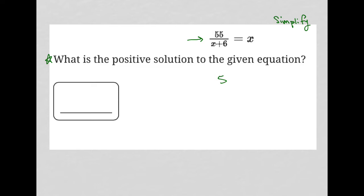So I'm going to just simplify this. You can use your scratch paper to solve this. I'm going to multiply both sides by x plus 6. So it cancels out here. I'm left with 55 equals x squared plus 6x.